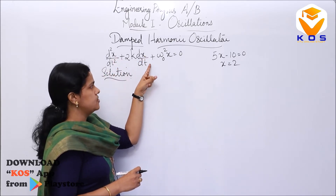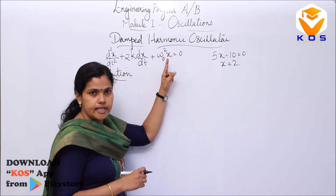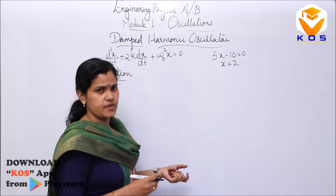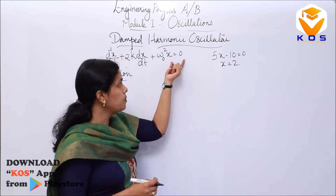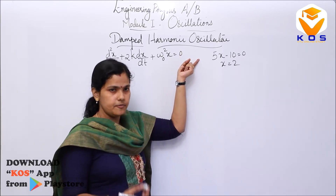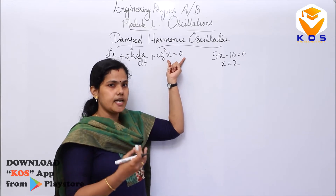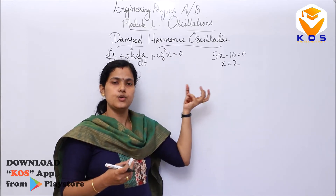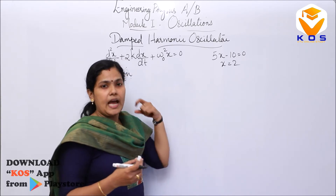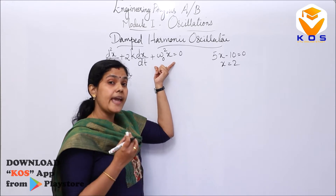This differential equation has a second-order derivative, then a first-order derivative of x, then the x term. If you study differential equations, there are many types — this is a homogeneous equation because the right side is zero. For such homogeneous equations, the solution will be exponential.